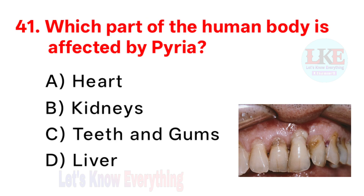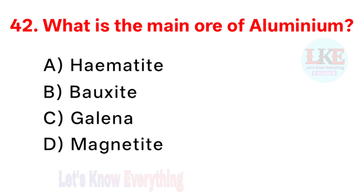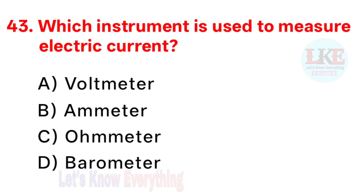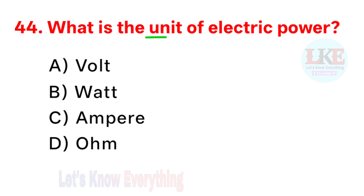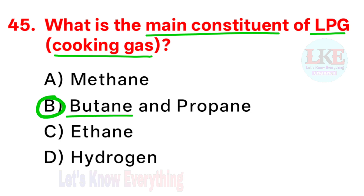Question number 41: which part of the human body is affected by pyorrhea? Right answer option C: teeth and gums. Question number 42: what is the main ore of aluminium? Right answer option B: bauxite. Question number 43: which instrument is used to measure electric current? Right answer option B: ammeter. Question number 44: what is the unit of electric power? Right answer option B: watt. Question number 45: what is the main constituent of LPG cooking gas? Right answer option B: butane and propane.